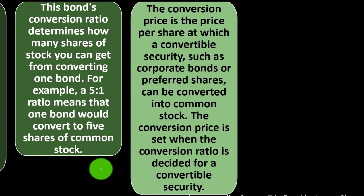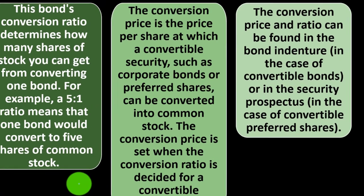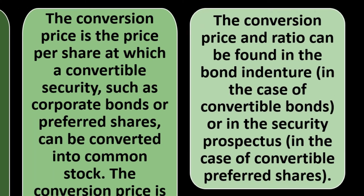The conversion price is the price per share at which the convertible security — such as corporate bonds or preferred shares — can be converted into common stock. The conversion price is set when the conversion ratio is decided for a convertible security. The conversion price and ratio can be found in the bond indenture in the case of convertible bonds, or in the security prospectus in the case of convertible preferred shares.